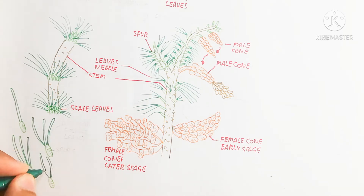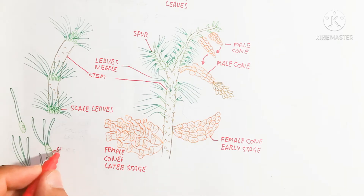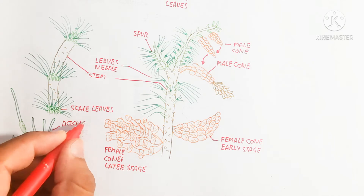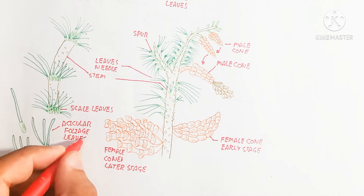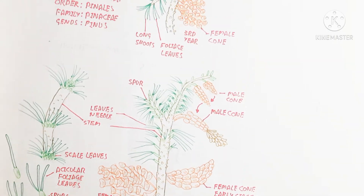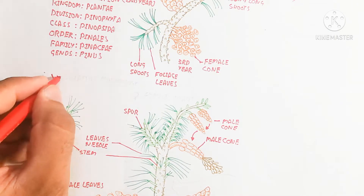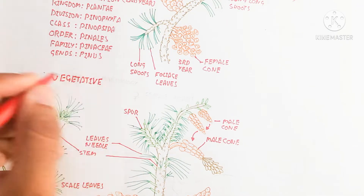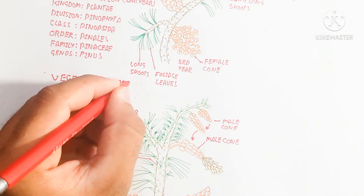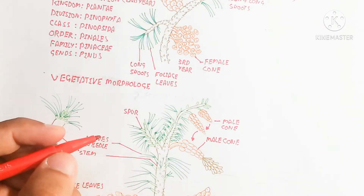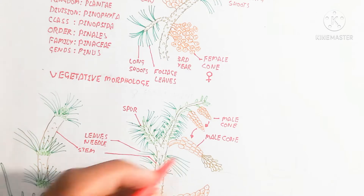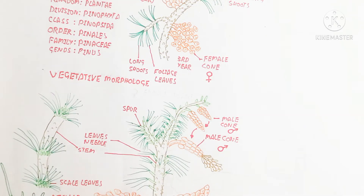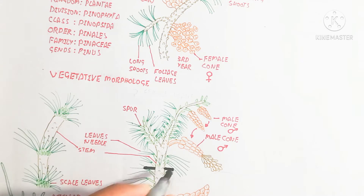Now let's talk about the cross section of the stem to understand the anatomical aspect. The vegetative morphology was covered above; now we move to the anatomical aspect. The male cone is shown by an arrow and the female cone is shown by a mirror-like sign.